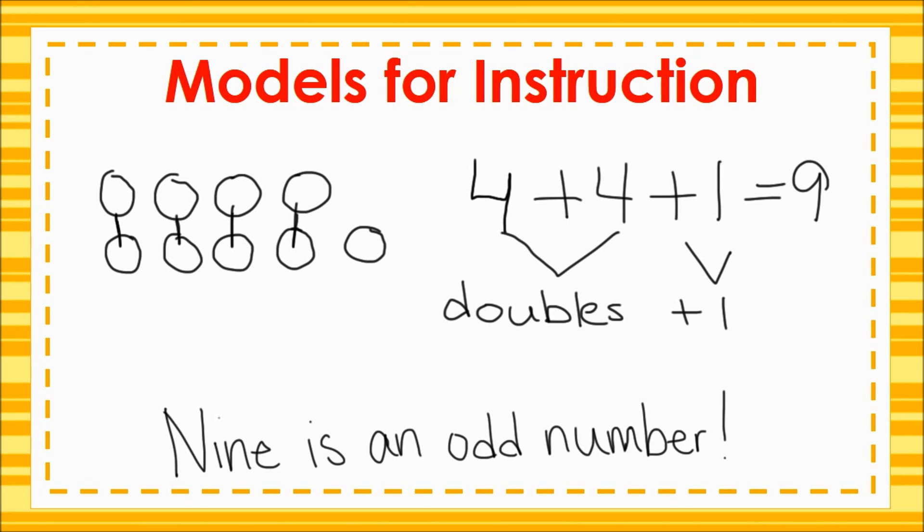The rule for examining the digit in the ones place is not useful for young students working with small numbers. Students may be able to discover the patterns in even and odd numbers on their own with lots of hands-on practice. The focus should be on making pairs, counting by twos, and using doubles and doubles plus one facts.